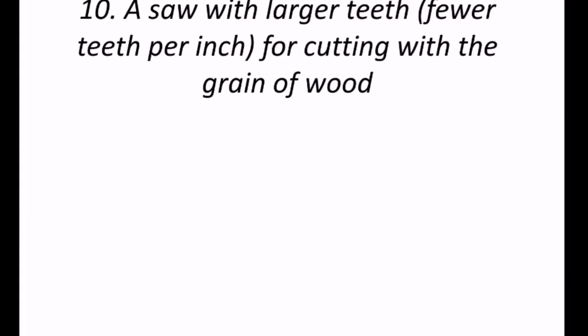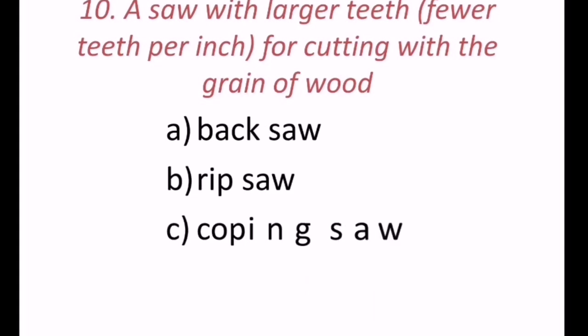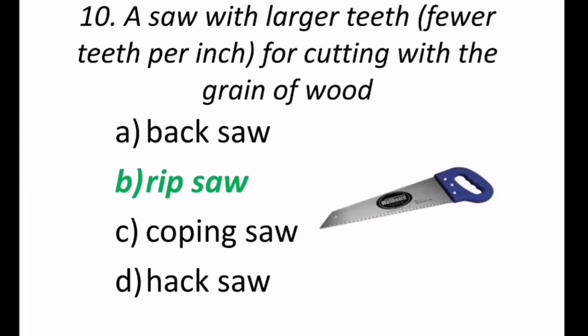10th question reads, A saw with larger teeth, for cutting with the grain of wood. So larger teeth, for cutting with the grain of wood. May be backsaw, or ripsaw, coping saw, or hacksaw. So the correct answer is, ripsaw, it is with larger teeth, or simply we can say, fewer teeth per inch, ripsaw.